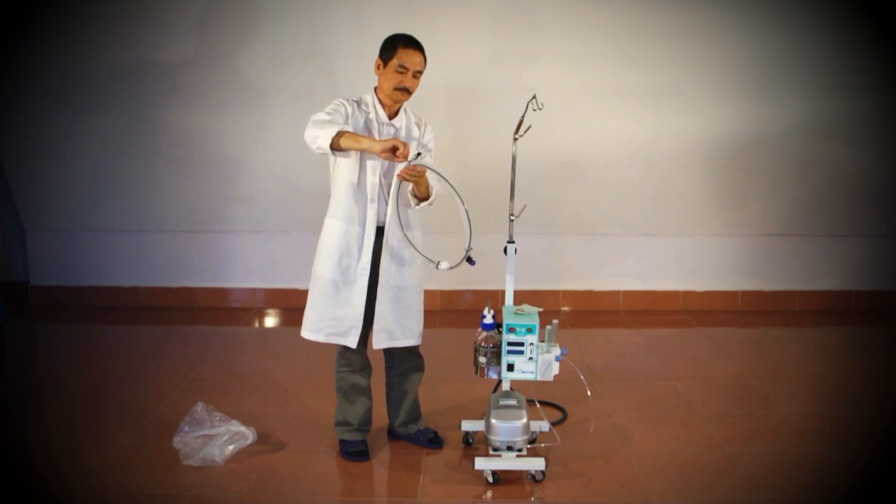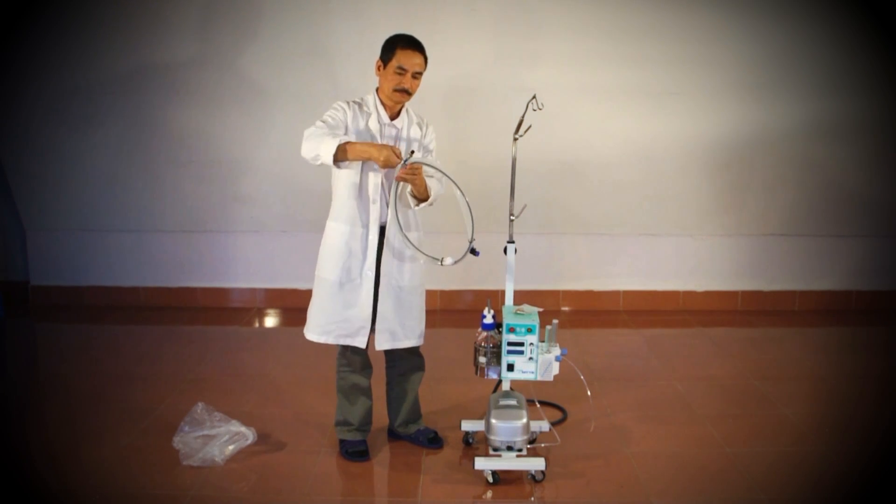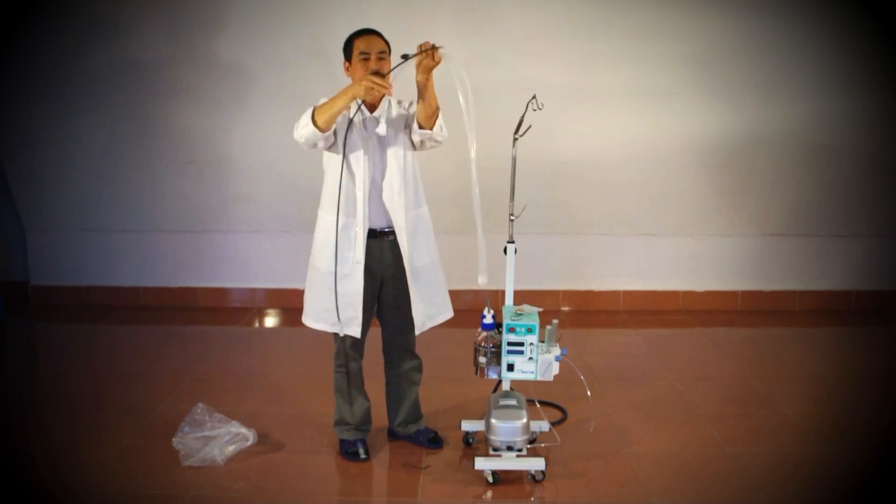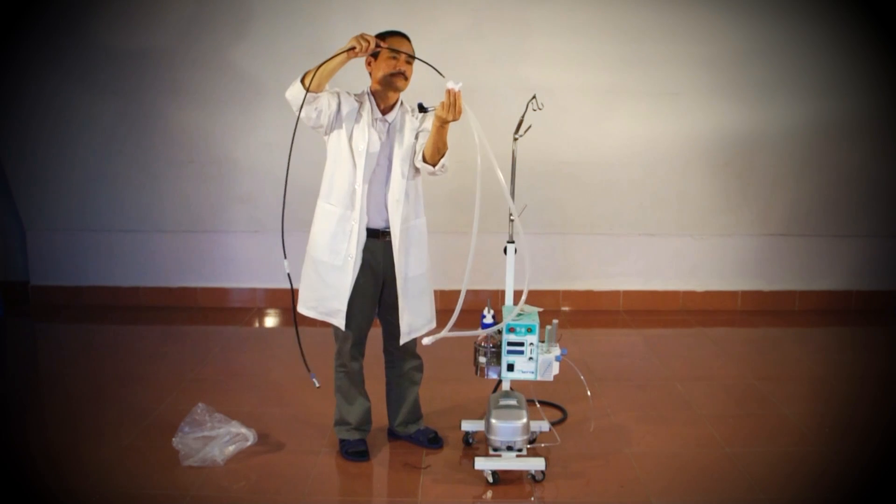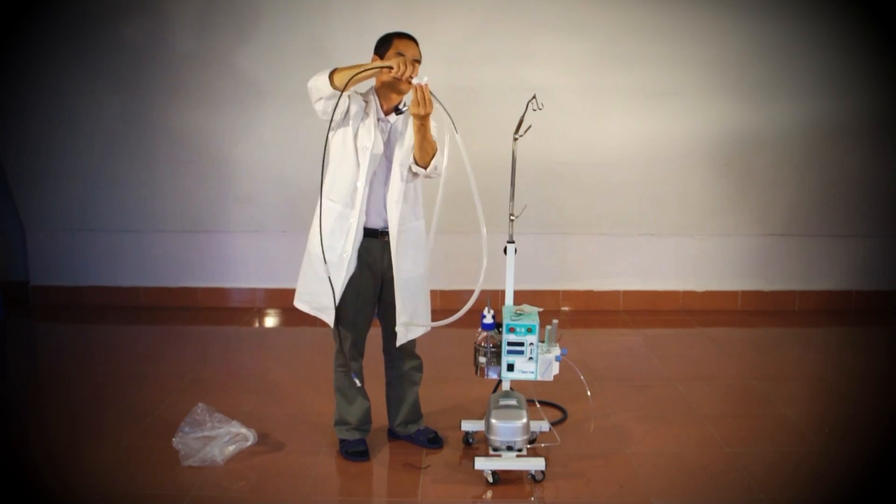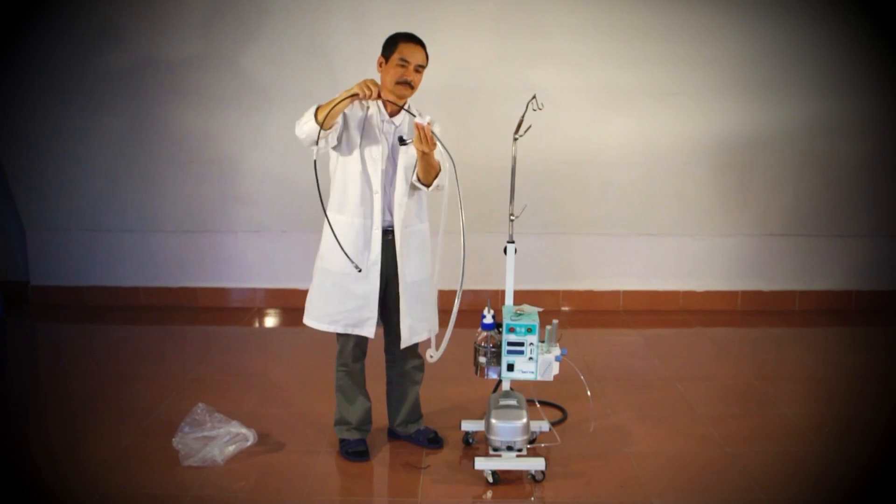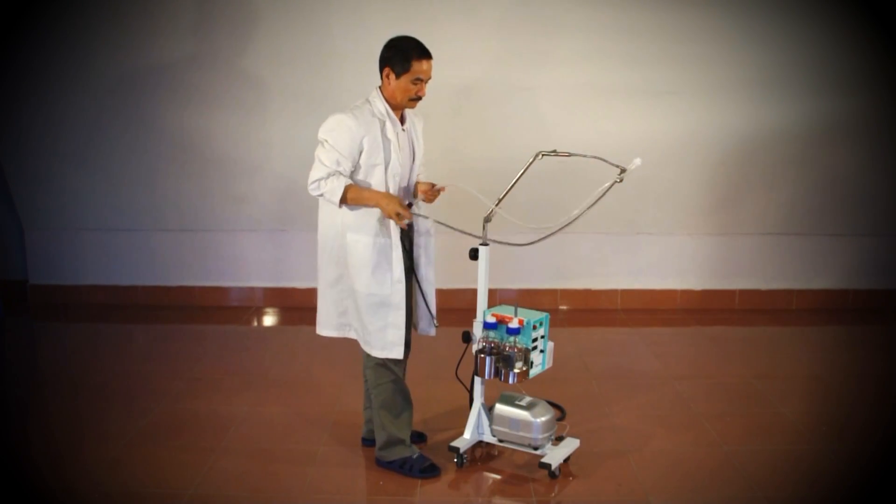Once the bottles are in place, we can connect the patient circuit or tube set. We start by inserting the heater wire into one side of the silicon tubes. Like this. Once inserted, attach the patient end of the patient circuit to the CPAP arm.